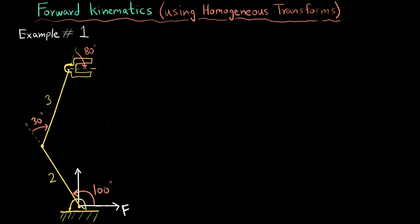The robot has motors at each of the joints here, here, and here. As a result of these motors, the joints are able to rotate and the links are able to be moved with respect to one another. In this particular configuration, the first link with respect to the fixed frame is at 100 degrees, the second link is at 30 degrees, and the end effector is at 80 degrees, and we have to do the forward kinematics.